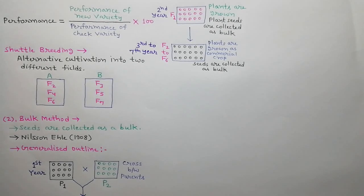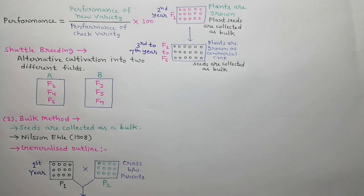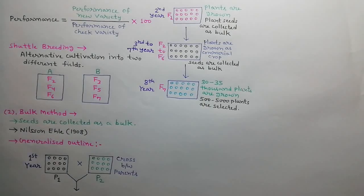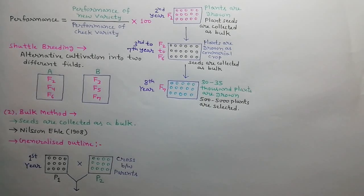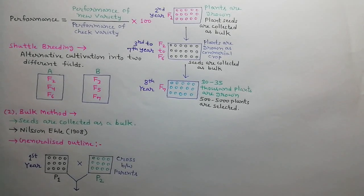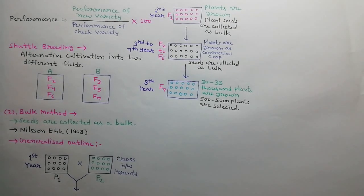From the third to seventh year, F2, F3, F4, F5, and F6 generations are raised. During each year, plants are grown as a commercial crop and their seeds are collected as a bulk. In the eighth year, F7 generation is raised by growing 30,000 to 35,000 plants at particular distances, and 500 to 5,000 plants with superior characters are selected.